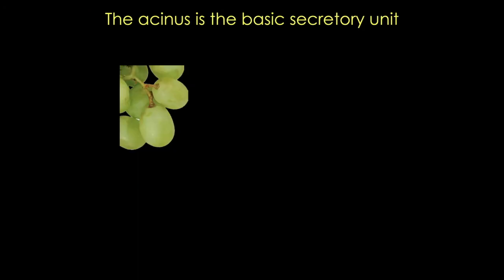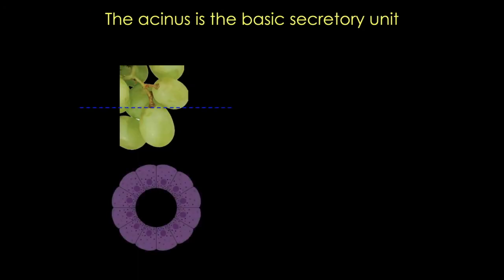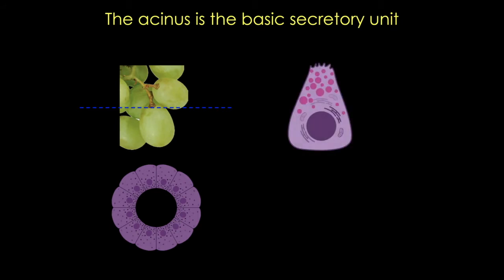Now let's look more closely at the acinar unit by taking the cross section through the top of one grape. In the parotid and pancreas glands, the acinar unit consists of serous cells, which means that the secretory product is also called serous, and that means that the protein products are secreted in vesicles. If we take a closer look at a single serous cell, we can see that it has a basophilic basal cytoplasm, a centrally located nucleus, and variously staining secretory vesicles, or zymogen granules,